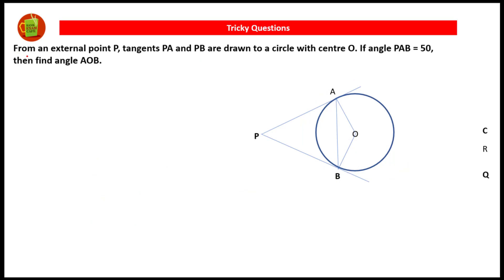Here is another question on the screen. From an external point P, tangents PA and PB are drawn to a circle with center O. If angle PAB is equal to 50°, find angle AOB. PA and PB are the tangents from the exterior point P to the circle with center O, angle PAB is 50 degrees, and we have to find angle AOB.